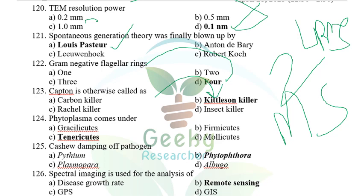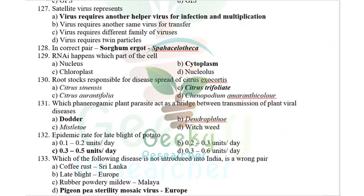Phytoplasma comes under Tenericutes (previously Firmicutes/Mollicutes, now reclassified to Tenericutes). Cashew damping off is caused by Phytophthora. Spectral imaging is used for the analysis in remote sensing.